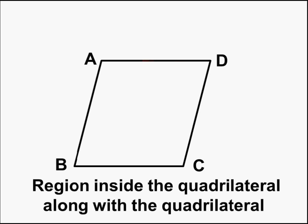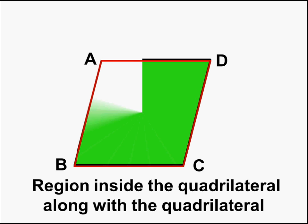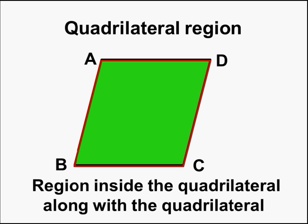If we take together the region inside the quadrilateral along with the quadrilateral itself, then it is called the quadrilateral region. So this is the quadrilateral region of quadrilateral ABCD, which includes the green colored area and also the quadrilateral, shown by the red line — that is the boundary of this quadrilateral.